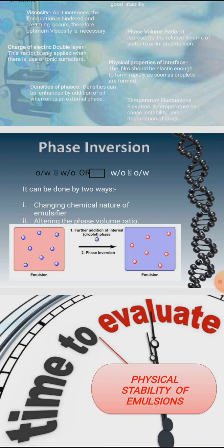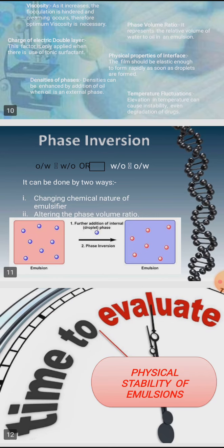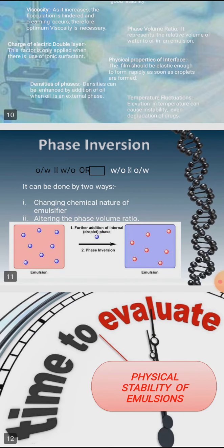The next factor is temperature fluctuation. Elevated temperature can alter the partition characteristics of the emulsifying agent as well as preservatives used in the emulsion, resulting in instability. Temperature can also increase the chemical degradation of drugs and other ingredients used in the preparation of emulsion. Chemical instability also leads to physical instability. The chemical instability also leads to physical instability.